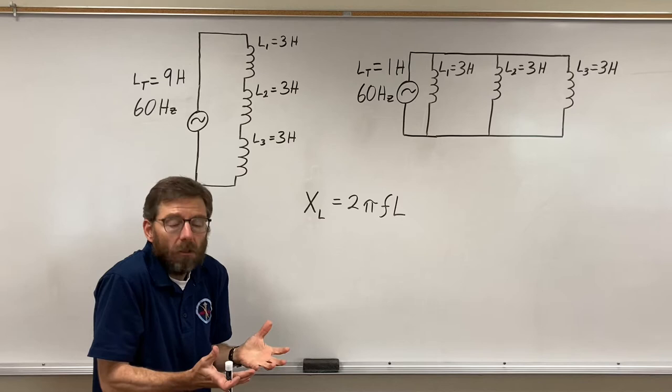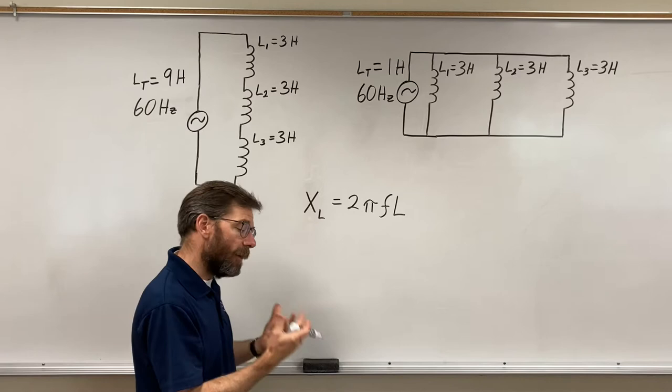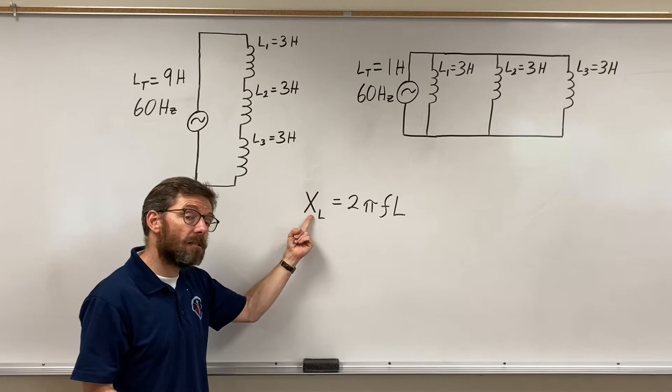Resistors are in opposition measured in ohms. They reduce current flow. The higher the resistance the less current. We'll find that the higher your inductive reactance, the less current flows.